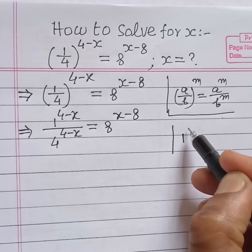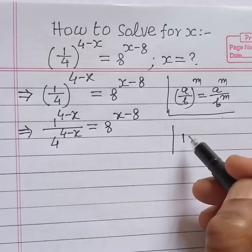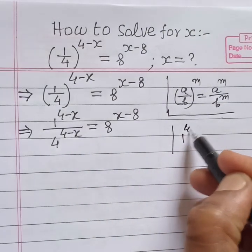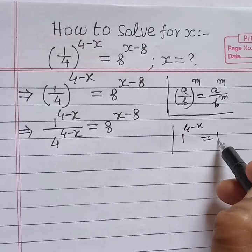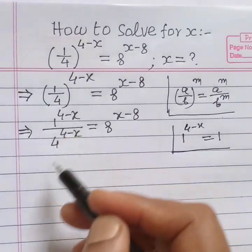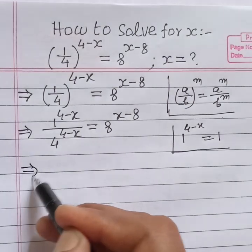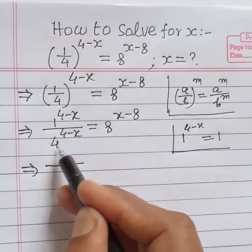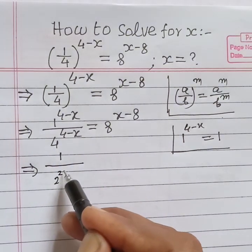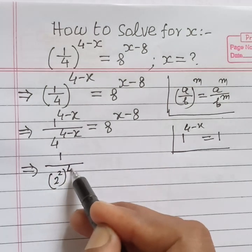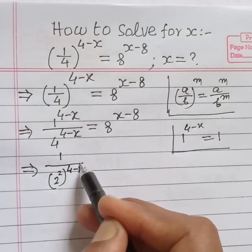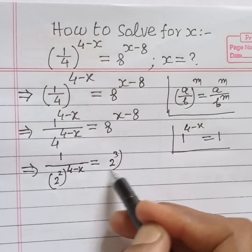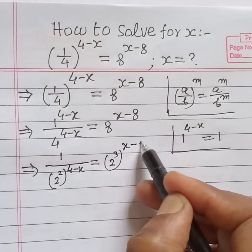Now, 1 to the power m — any power of 1 is 1. So 1 to the power (4 minus x) equals 1. Therefore, the expression becomes 1 divided by 4, where 4 can be written as 2 squared, to the power (4 minus x), is equal to 8, where 8 can be written as 2 cubed, to the power (x minus 8).